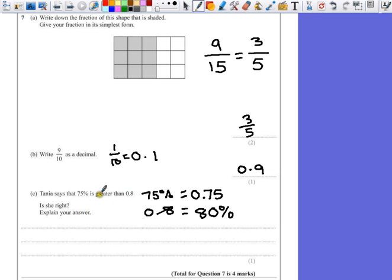We can use either of these justifications to prove that one number is bigger or less than the other. But Tanya said 75% is greater than 0.8. Well, it's obviously not. 75% is less than 80%. So what we're going to have to say is no, because she's not right.